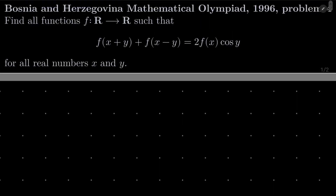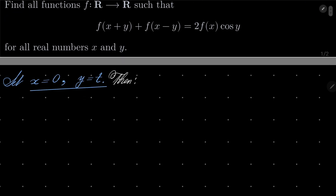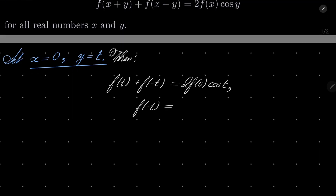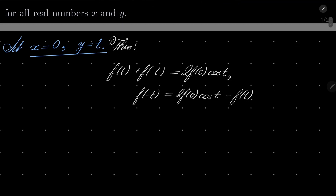So as I suggested, let's first set x = 0, y = t. We have then f(t) + f(-t) = 2·f(0)·cos(t). So f(-t) = 2·f(0)·cos(t) - f(t). Let's remember that — we will use it later.